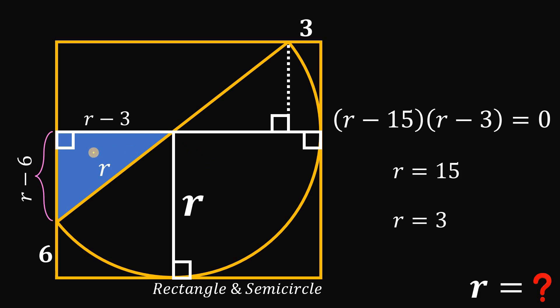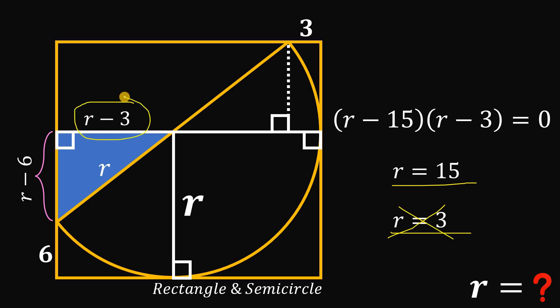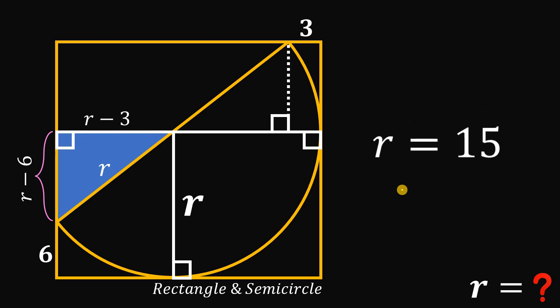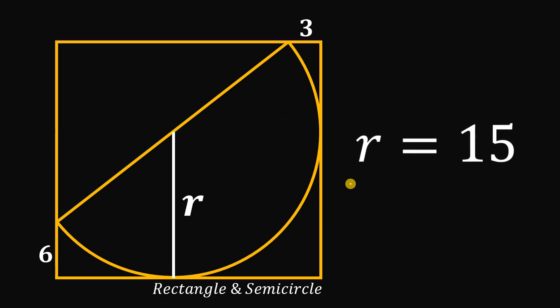We get two possible values: r equals 15 or r equals 3. However, r cannot equal 3 because if r equals 3 then r minus 3 equals zero, meaning one side of the triangle would be zero — and technically we don't have a triangle if one of its sides equals zero. Therefore r equals 3 is not possible, and the only valid value of the radius must be equal to 15 units. That is the answer to this question.